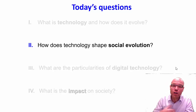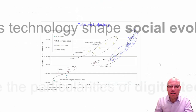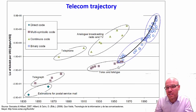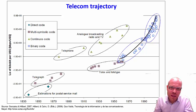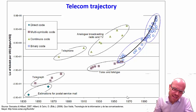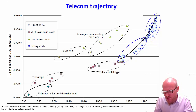Now we can ask how technological evolution shapes social evolution. If we go back to our trajectories of technological evolution and progress, this is the telecommunication trajectory which we saw in the last video.